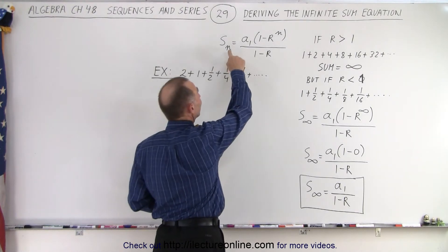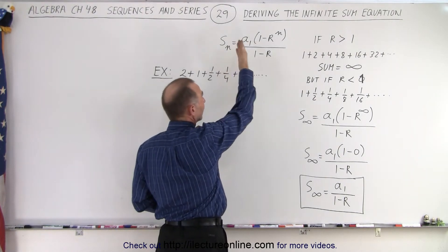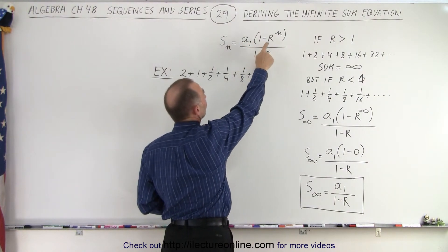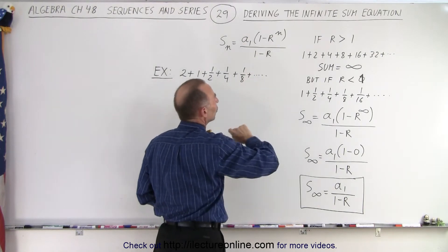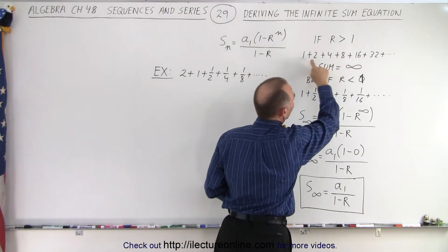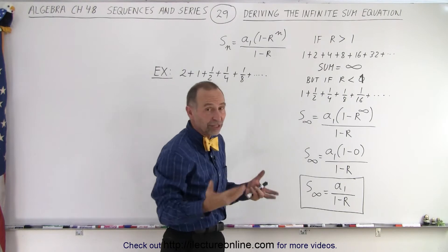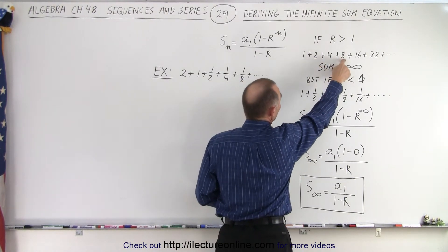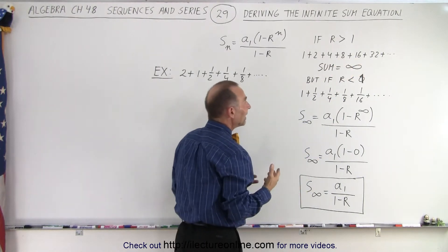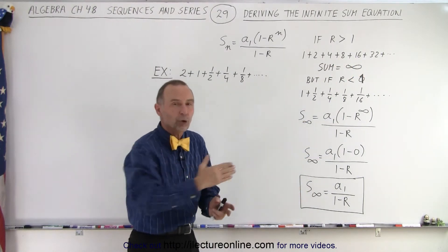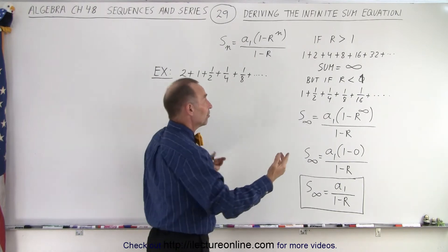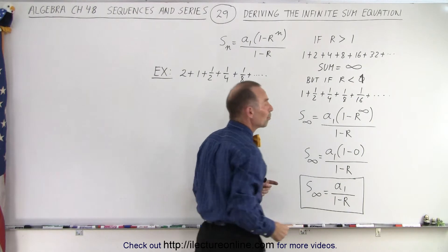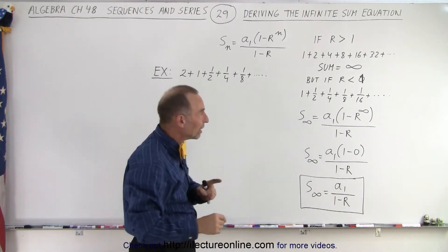Here we have the equation for the nth partial sum: a-sub-1 times (1 minus r to the n) divided by (1 minus r). So if r is greater than 1 — like in the example where r equals 2, where the next number is twice the previous — then trying to find the infinite sum gives us infinity, because the terms keep getting bigger and bigger.